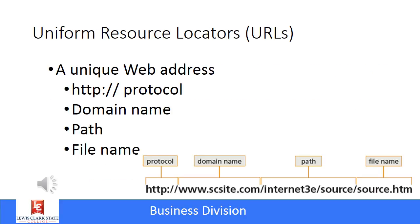If you had to remember an IP address for every place you wanted to go on the internet, it would make the internet very clunky and not very user-friendly. To make it more friendly with the WWW or World Wide Web, you have something called a Uniform Resource Locator, or URL — a unique web address that uses a domain name. The first thing you'll see is a protocol, such as HTTP, HTTPS, or FTP. Then the domain name, like www.lcsc.edu. If you wanted to go into a specific folder, there would be a path using a forward slash, and then finally the file name, which might end in HTM, PDF, or PHP.